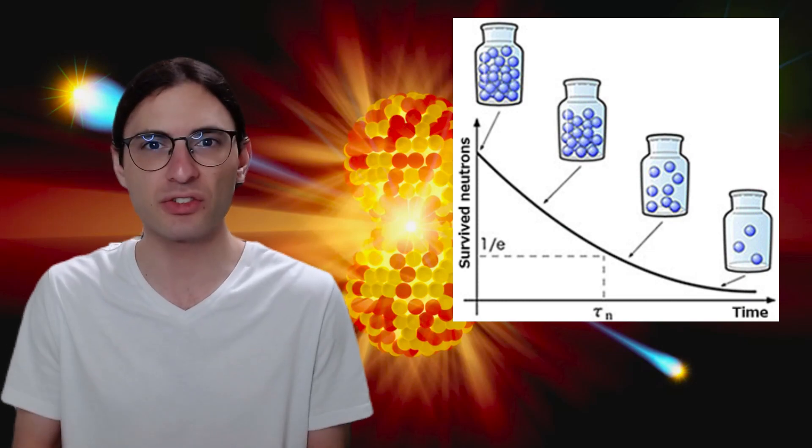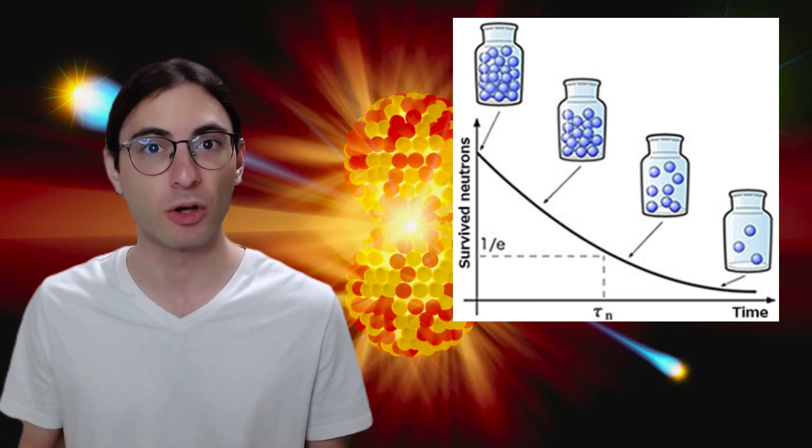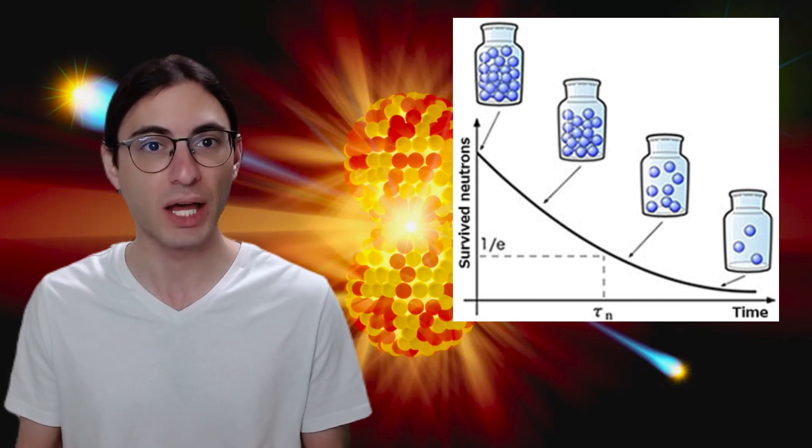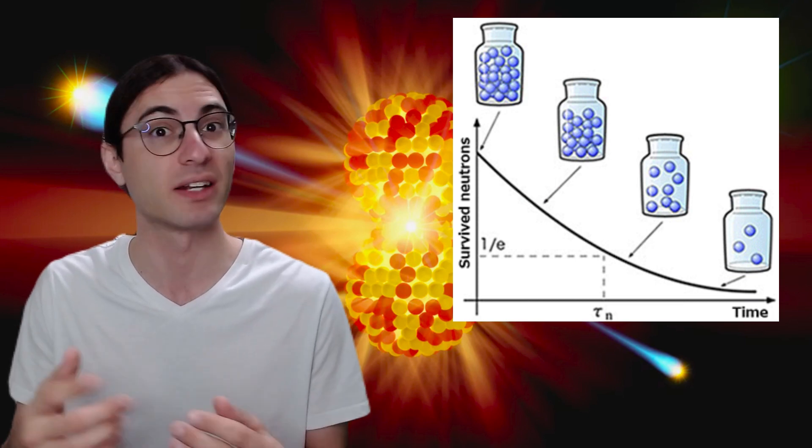But alternatively, you could just fill a magnetic trap called a bottle with a certain amount of very cold neutrons, and then count how many remain after waiting a certain amount of time. This also allows for the determination of the average lifetime of a neutron. And you get nearly 10 minutes and 8 seconds.